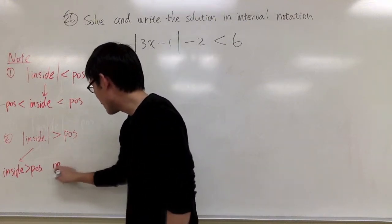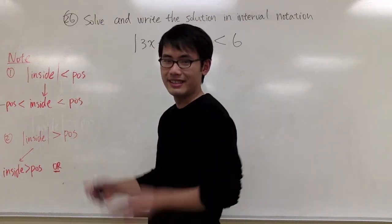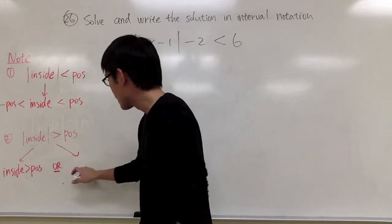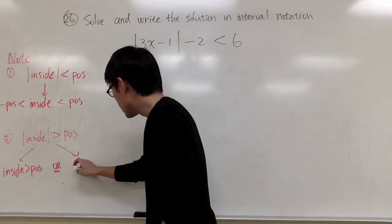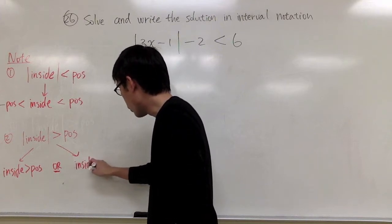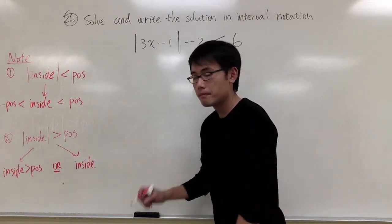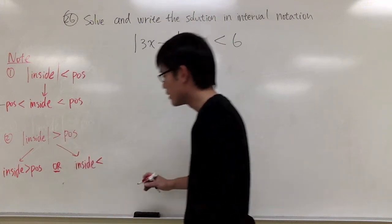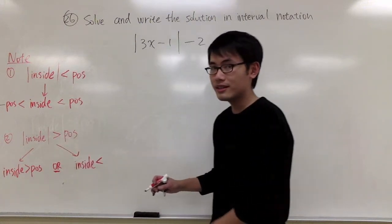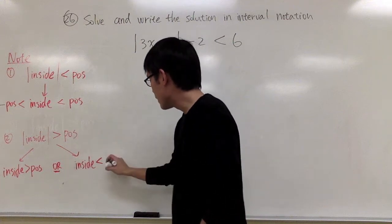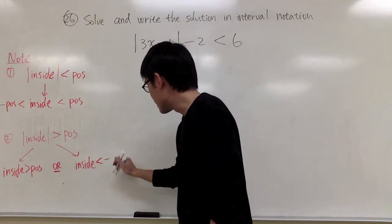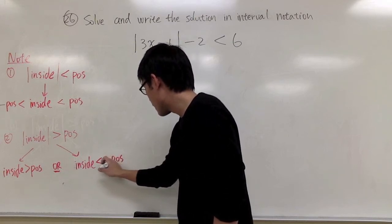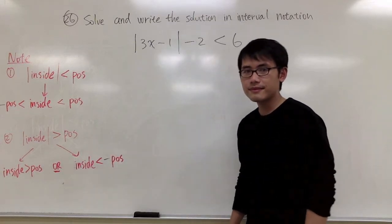Or we can also have a second part. For the second end, I write down the inside expression again — the inside always stays the same — but I switch the inequality to less than, going the other direction. Instead of positive, I make it negative — whatever the positive number is.